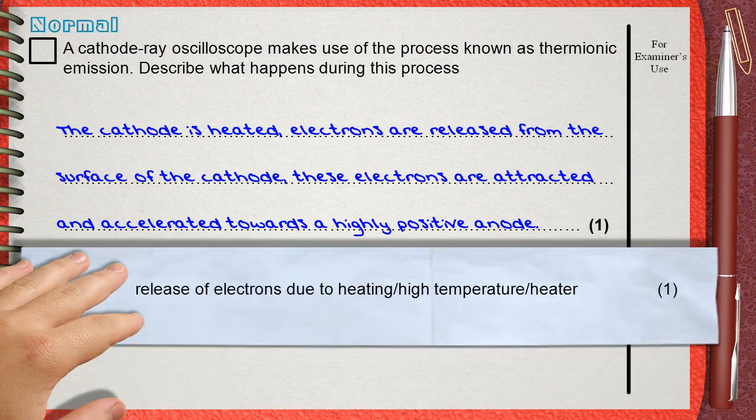The mark scheme awards one mark for this question. The one mark is for the release of electrons due to heating, or high temperature, or any mention of the heater. This is what we said — the cathode is heated and electrons are released.